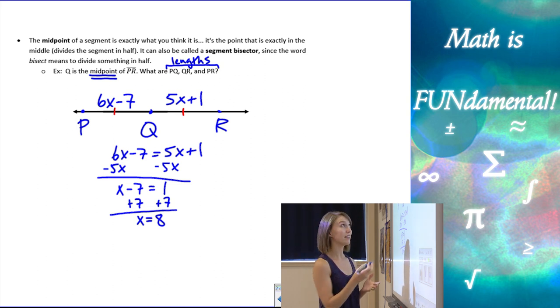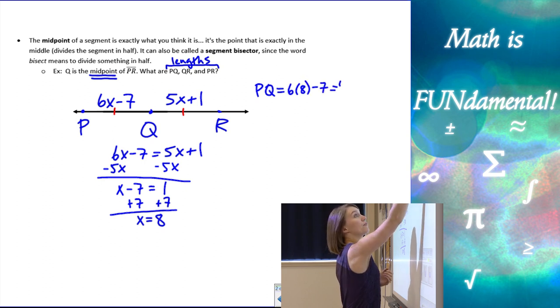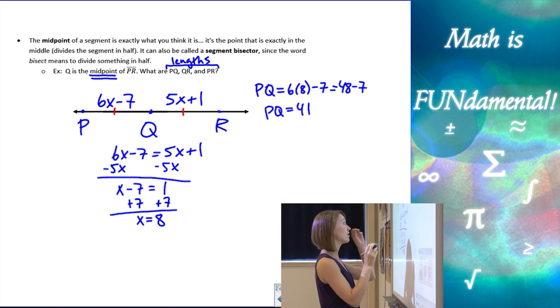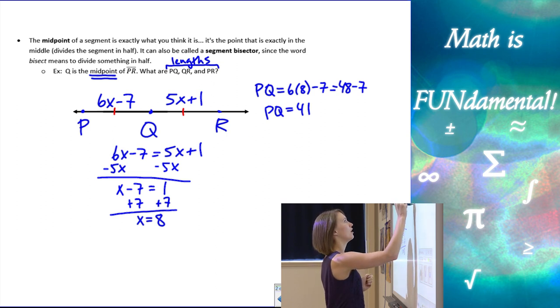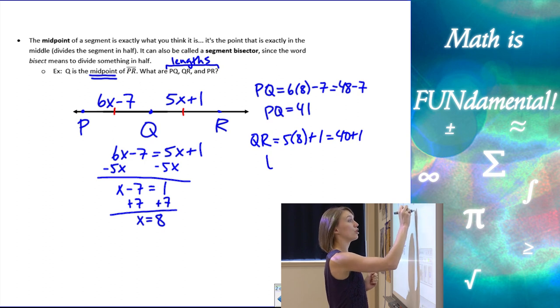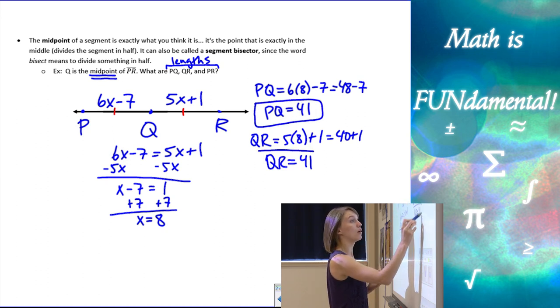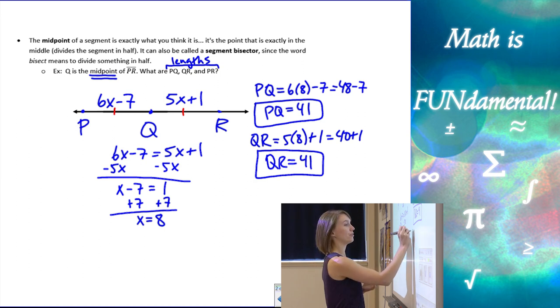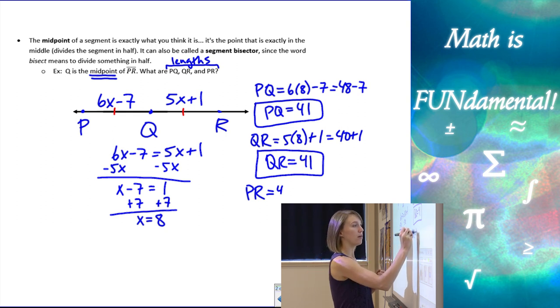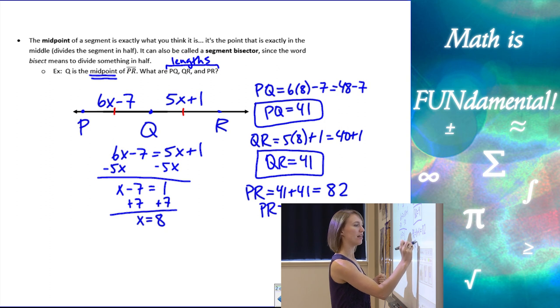So if we plug that in, substitute it, I'm going to have PQ is 6 times 8 minus 7, which is 48 minus 7. So PQ ends up being 41. And we want to make sure this all works out in the end. So don't box anything until you're sure. We've got QR is 5 times 8 plus 1, which is 40 plus 1. So QR is also 41, which is perfect. We wanted them to be equal. So now I know that those are the right values. And then PR, we just use our segment addition postulate. We add those two things together. 41 plus 41 gives us 82. That would be 82. So PR is 82.